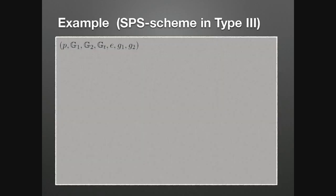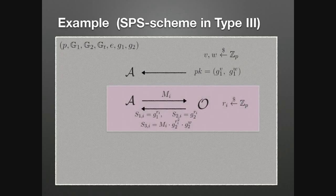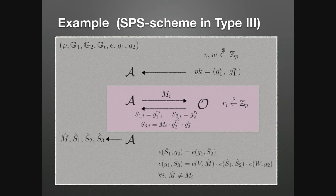Let me give an example of a scheme analyzable with our tool, along with its security experiment. Assume we have a bilinear map. We sample two group elements — this is the secret key — and feed the adversary the public key. The adversary has access to a signing oracle that, on input a message, computes a signature by sampling some randomness and returning three group elements. This step can be done an unbounded number of times. The adversary must then produce a forgery: a message and a signature of three elements. The adversary wins if the forgery satisfies the verification equations, and the forgery message must be different from those sent to the oracle.